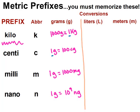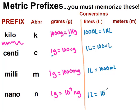If we were looking at the liters there's 1000 liters in a kiloliter. Notice it's exactly the same conversion, the only difference is I have liters instead of grams. For every one liter there's 100 centiliters. For one liter there's 1000 milliliters and for one liter there's 10 to the 9th nanoliters.